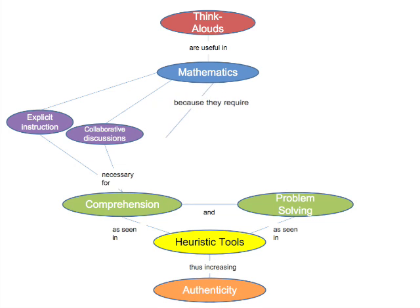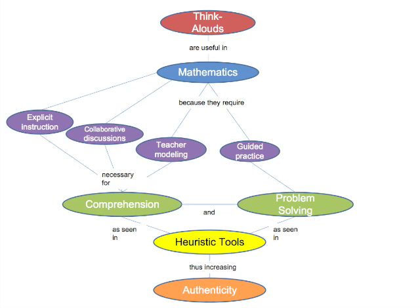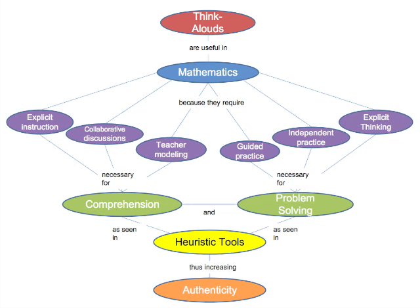Think alouds also require teacher modeling, so a teacher will conduct a problem on the board, showing students what they do, which leads into guided practice. Students will next do problems with the teacher before doing them on their own — that's the independent practice part. Finally, explicit thinking is one of the main aspects of the think aloud model, because it causes students to think aloud what is going on inside their minds as they work through different problems.